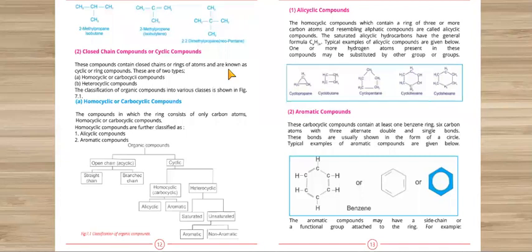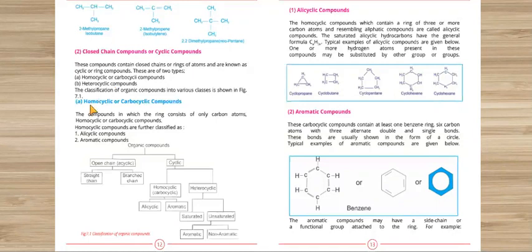The next category is closed chain compounds or cyclic compounds. Those compounds which form a closed chain or ring of atoms we call cyclic or ring compounds. These can be further divided into two types: homocyclic or carbocyclic compounds, and heterocyclic compounds. Homocyclic or carbocyclic compounds form a cyclic structure made entirely of carbon atoms.